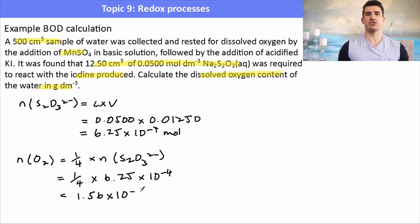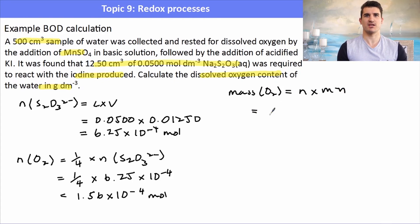Once we've worked out the number of moles of oxygen, we can work out the mass of oxygen that was in this sample by multiplying it by the molar mass. We want to find out the dissolved oxygen content in grams per decimeter cubed. So this is going to allow me to work out the amount of grams in our sample, which was 0.00500 grams.